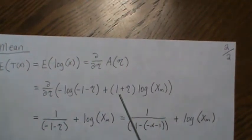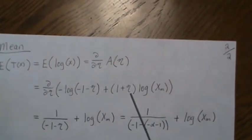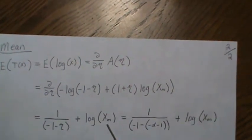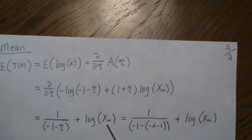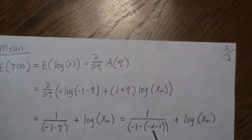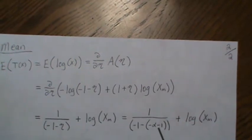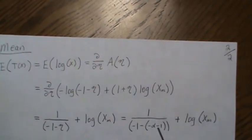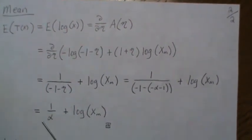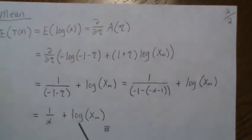If we put in what we know about eta, which is minus alpha plus 1, then this all reduces down to just 1 over alpha minus 1 plus log of X of M. So this is the mean of our sufficient statistic.